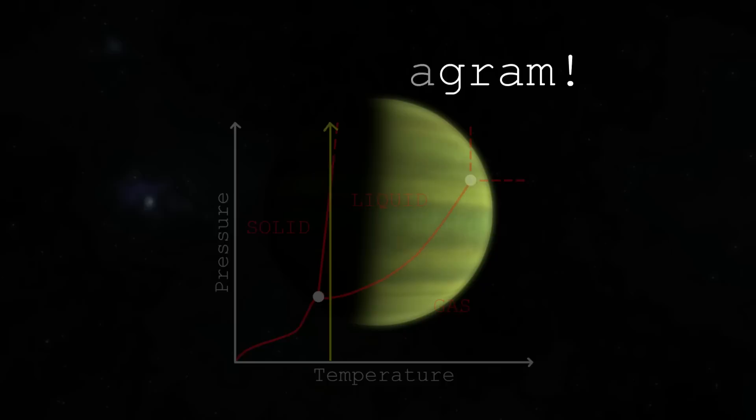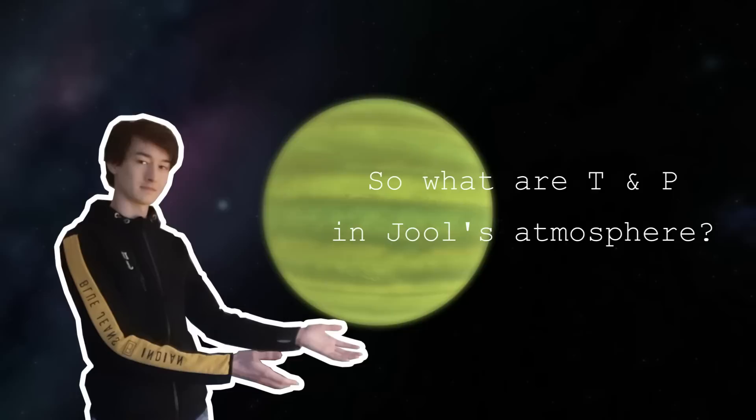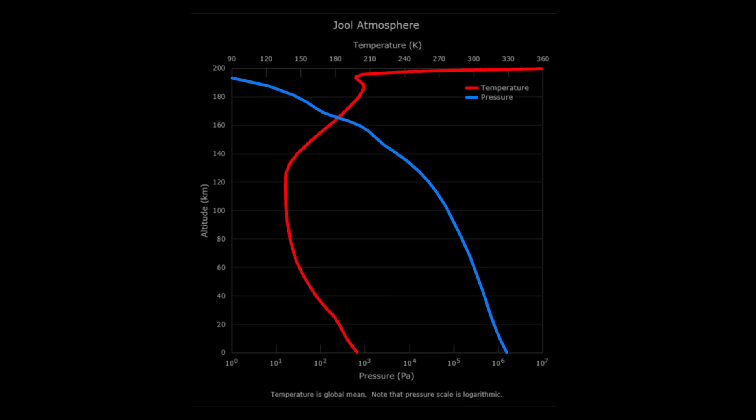So it is important to know what the conditions are in the atmosphere around Joule, so that we can determine if our candidate substance can still be a gas at that temperature and pressure. Lucky for us, we can find a diagram on the wiki page of Joule that shows both the pressure and temperature at different altitudes around Joule.